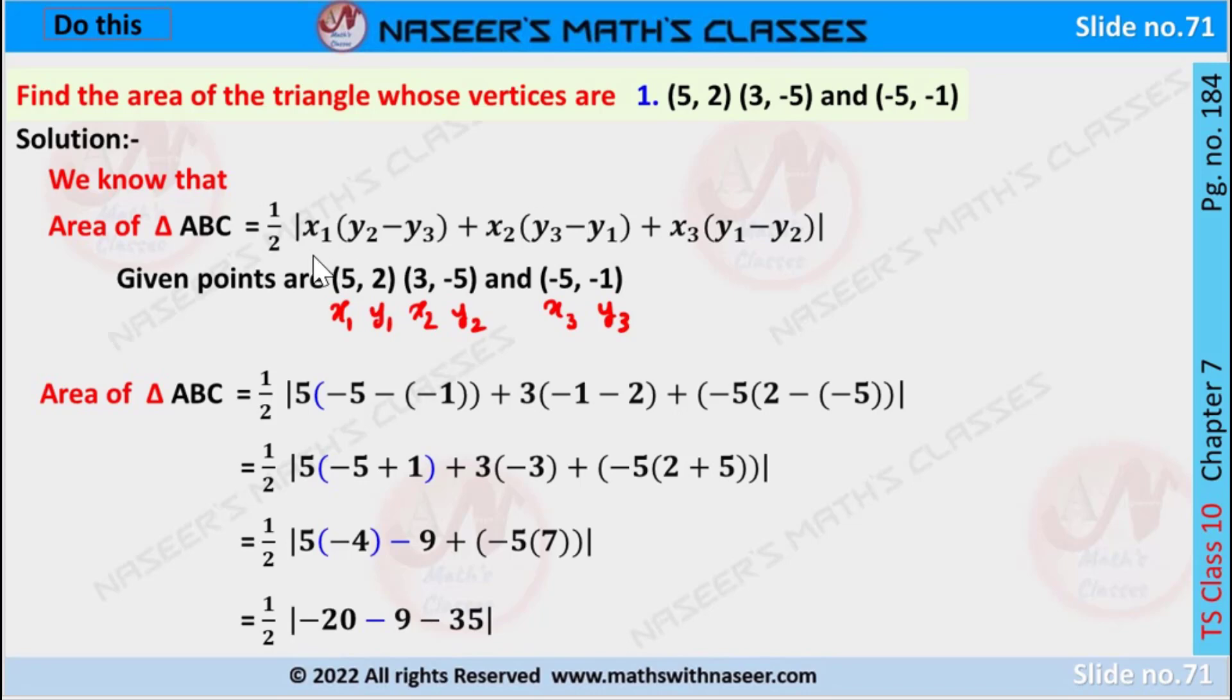in coordinate geometry is given by 1/2 mod[x₁(y₂ - y₃) + x₂(y₃ - y₁) + x₃(y₁ - y₂)].